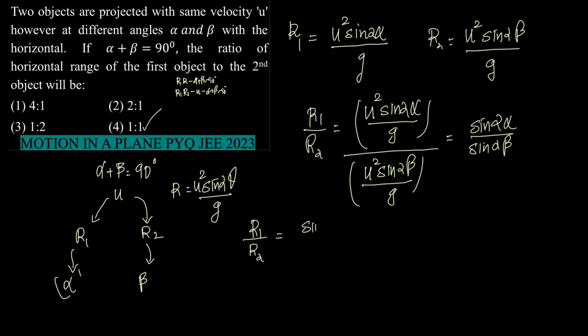Now see, what is given to us is α + β = 90°, in which case β = 90° - α. So instead of 2β, we will have 2 × (90° - α), which gives us sin(2α)/sin(180° - 2α).